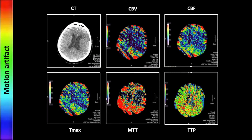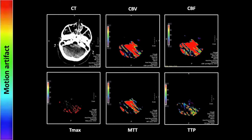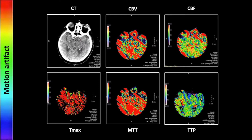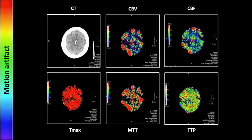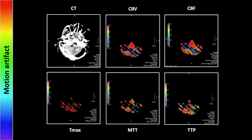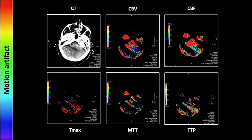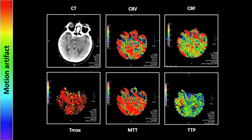We'll start with a couple of straightforward artifacts. This is a case with motion artifact — it looks pretty much like motion artifact on any CT scan. You can see these streaks across the entirety of the image, and in such a way that all images in all of these series are involved. Obviously this will pose some challenges when it comes to interpretation. So that is motion artifact.